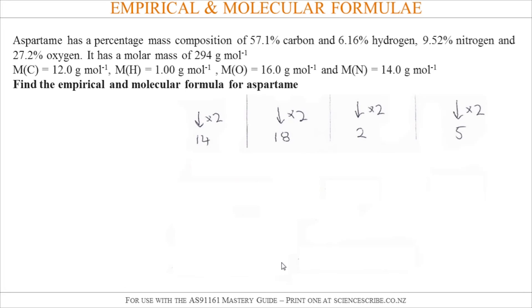On to the next step. That gives us 14, 18, 2, and 5. Then we can write the empirical formula. Remember I've got carbon in the left column which is C14, then I've got hydrogen in the next column H18, N2, and O5.